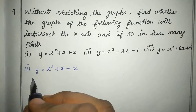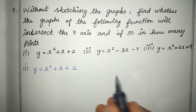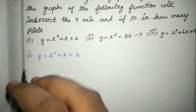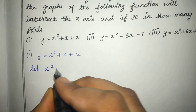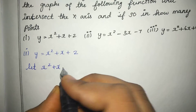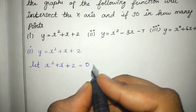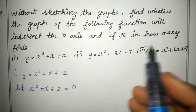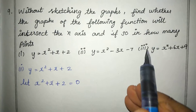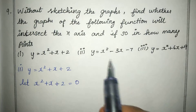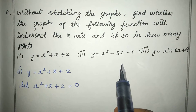Now, let the function equal to 0. So x-squared plus x plus 2 is equal to 0. To find the nature of the roots, we use the discriminant formula. We already know that discriminant is equal to b² minus 4ac.